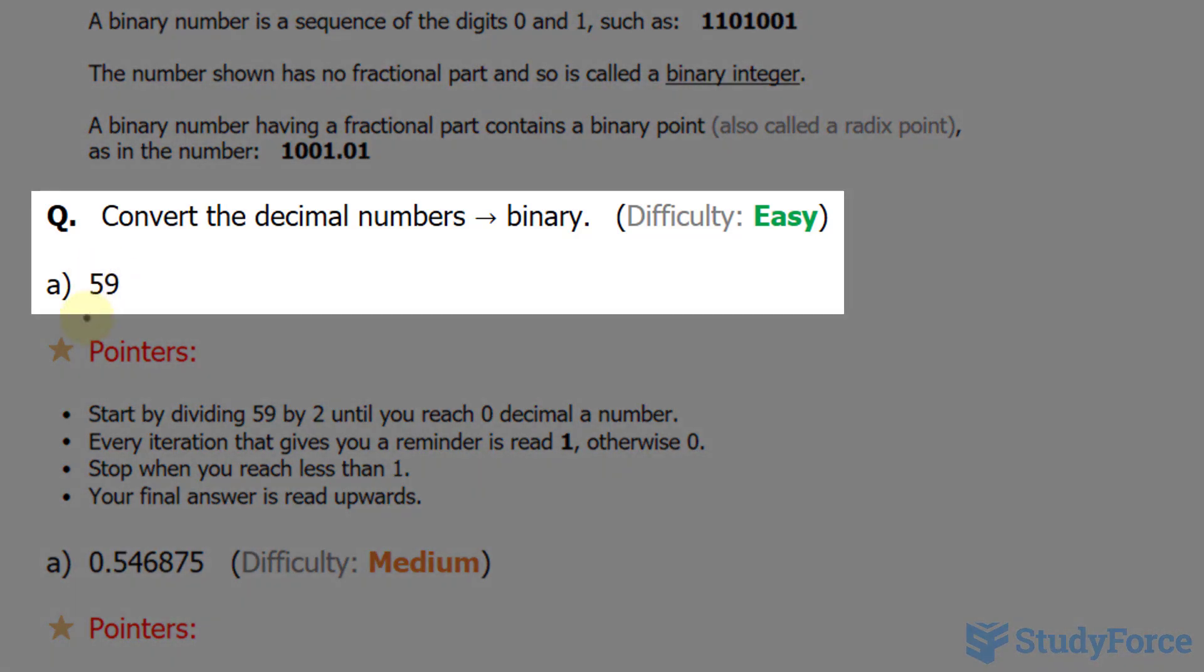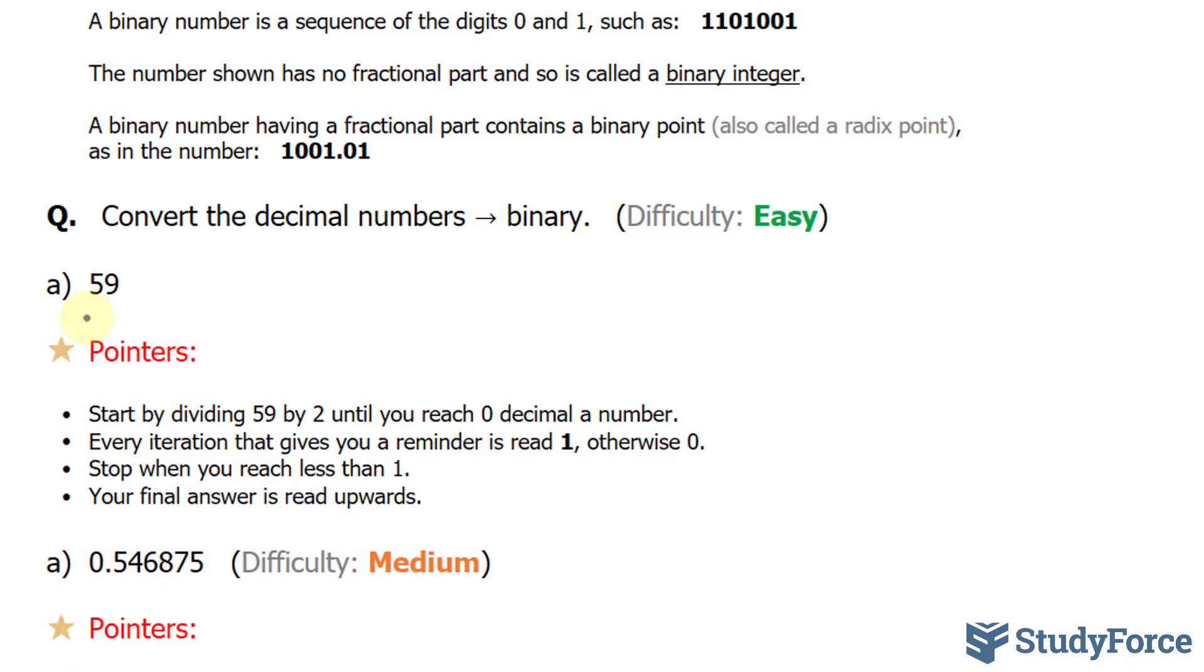So we have to convert 59, which is a decimal number, into binary. And to do this, we'll start off by taking the number 59 and dividing it by 2. 59 divided by 2 is 29.5. Now I've written down a pointer here, and it's really important that you pay attention to these. Whenever you divide a number, if it gives you a remainder, as shown here, you will read that as 1. So the way we read the first iteration is 1.